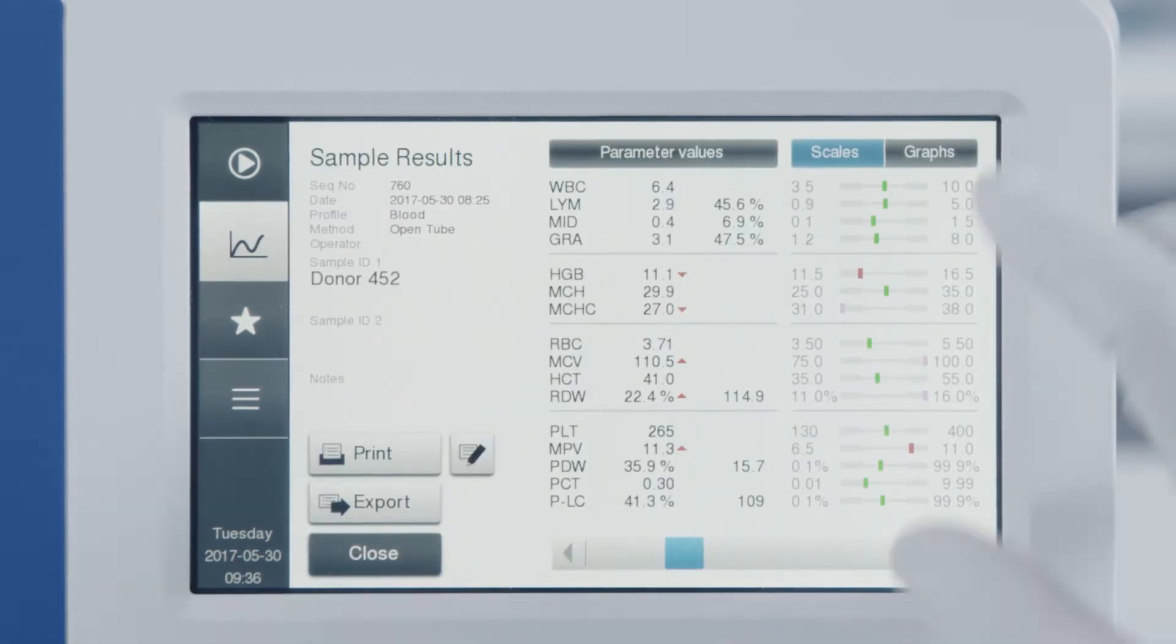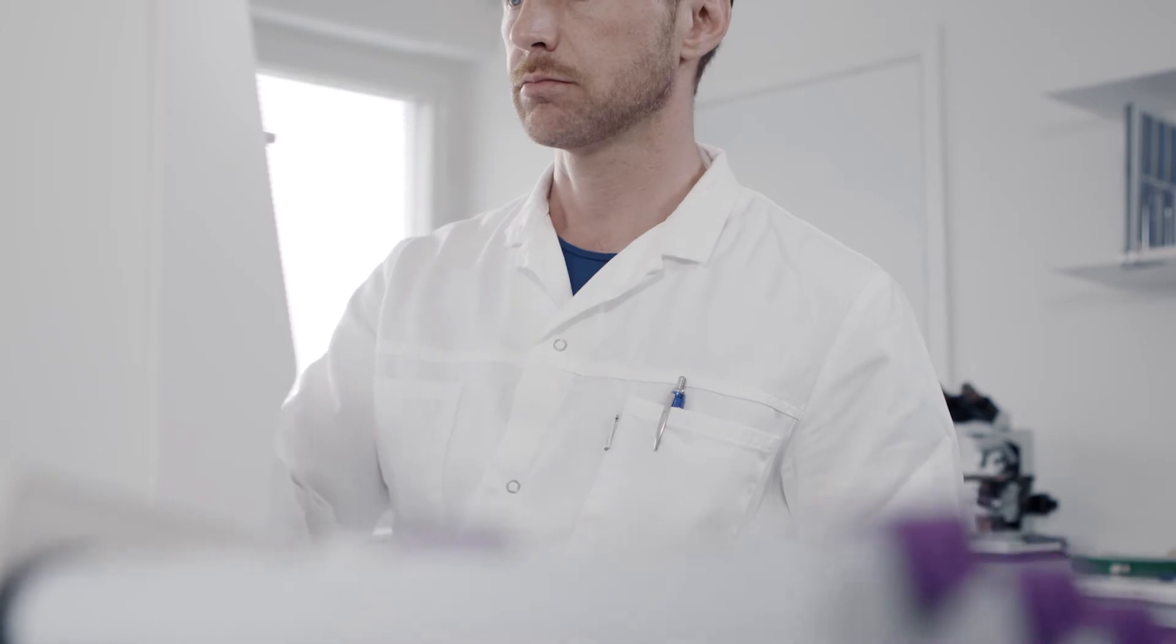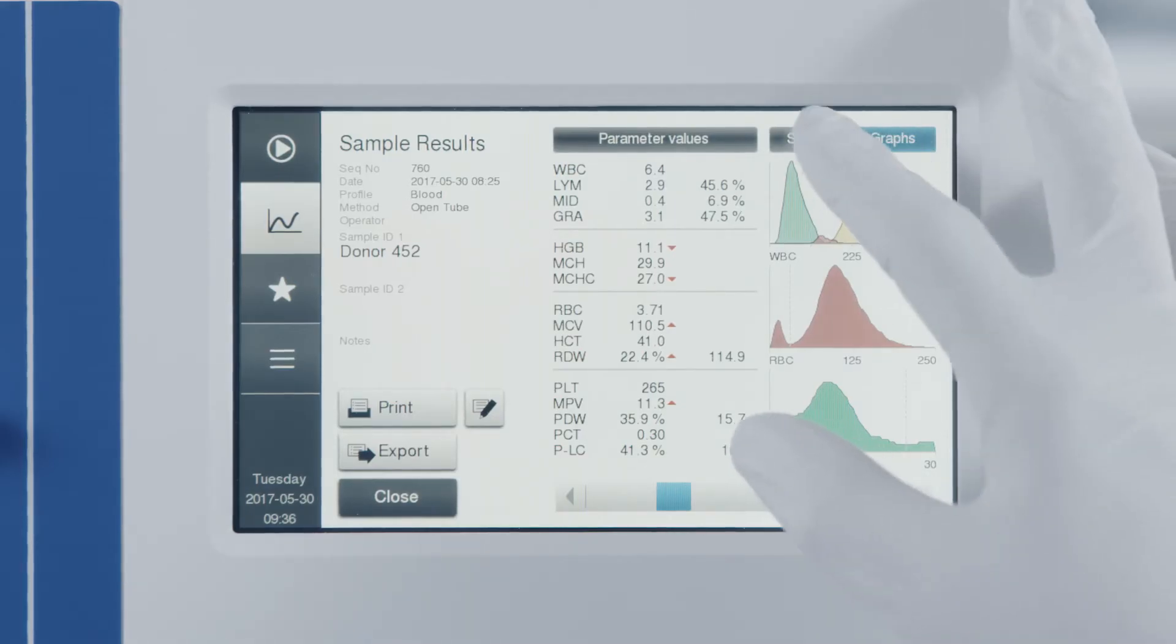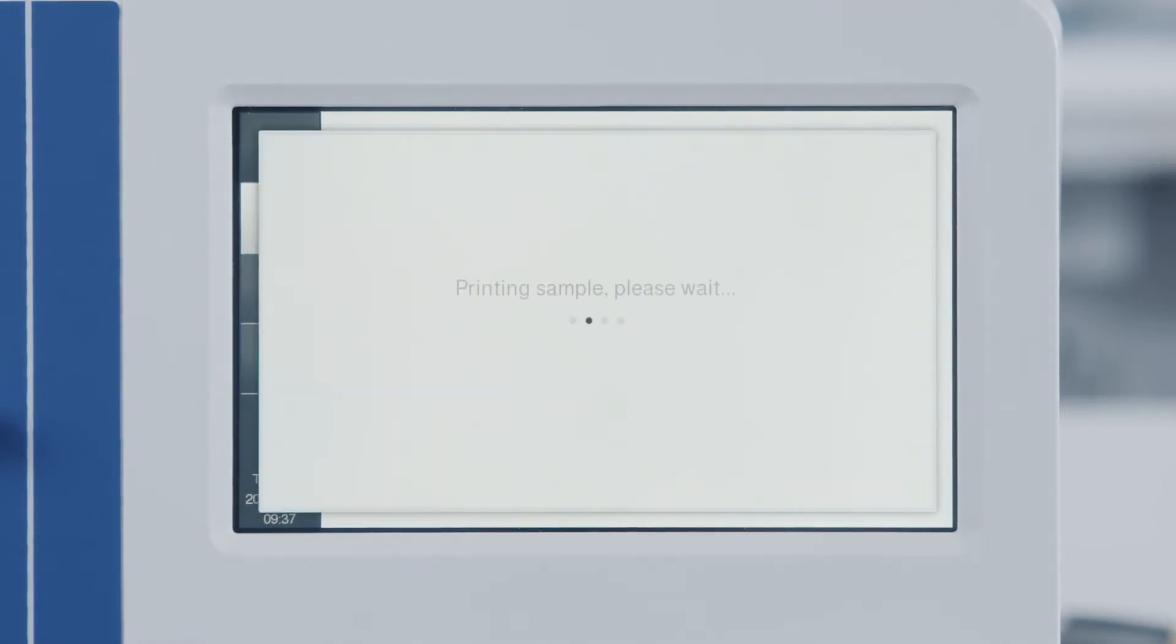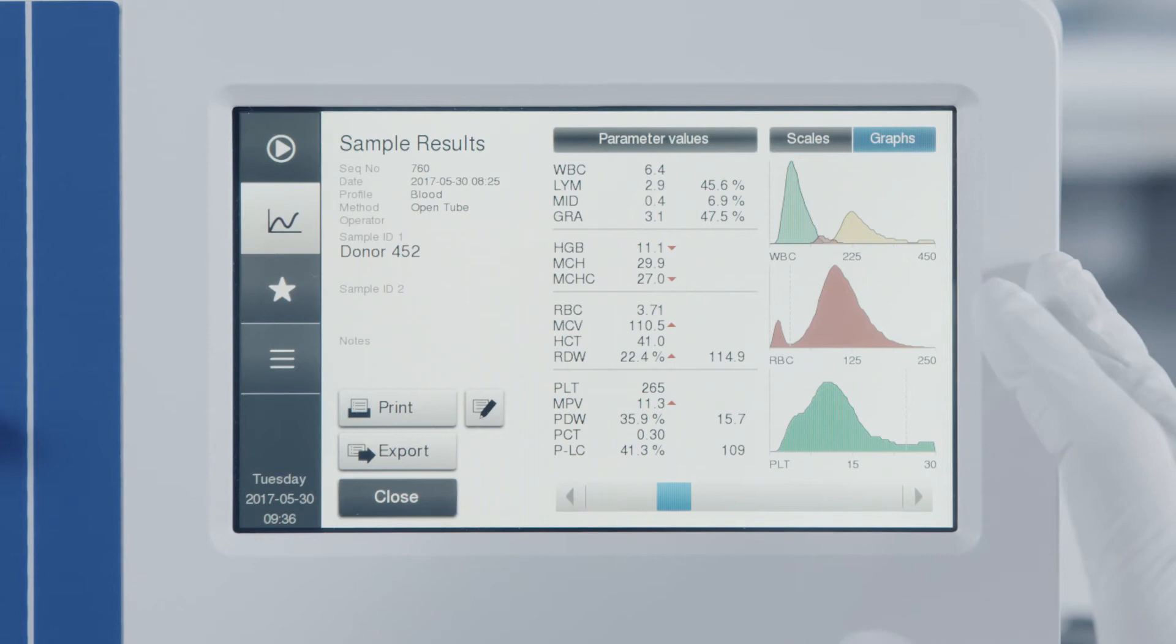Madonic M32 also keeps your options open about how you view results. Choose between histogram or reference scale views, for example. Printouts are fully customizable as well and cover any or all of the parameters you choose to display.